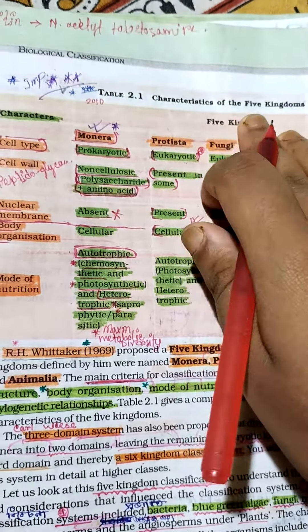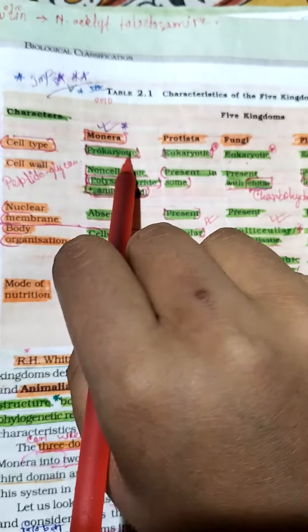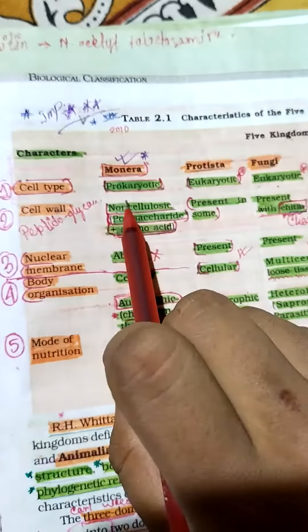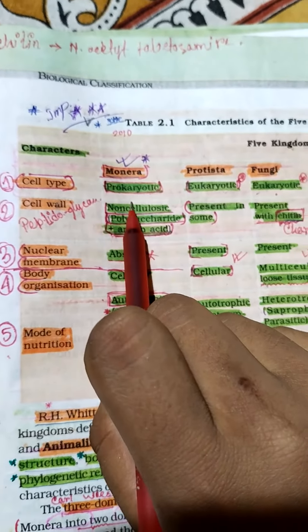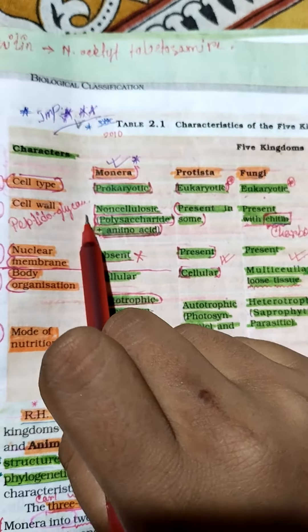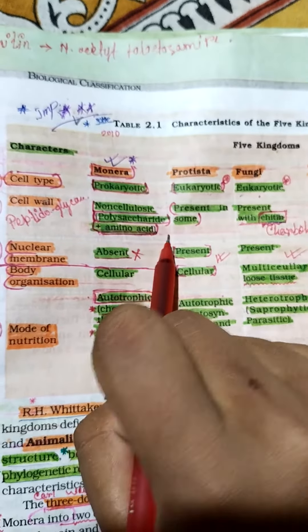Biological classifications characterize the five kingdoms: Monera, Protista, Fungi, Plantae, and Animalia. Monera have prokaryotic cell type, with cell walls made of non-cellulosic polysaccharide and amino acid.